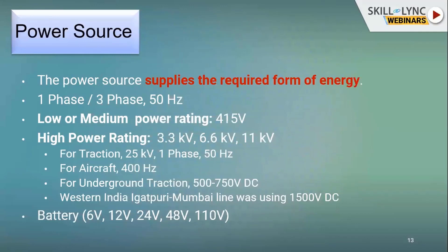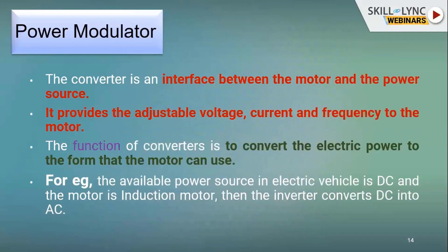For traction, 25 kV single-phase 50 Hz is used; for aircraft, 400 Hz supply is required; for underground traction, 500 to 750 V DC is used. The Mumbai–Igatpuri line in western India was 1500 V DC but has since been converted to AC. For DC power sources, different batteries like 6 V, 12 V, 24 V, 48 V, and 110 V are used — batteries are mostly used in electric vehicles. The power source and motor selection determines which power modulator to select.